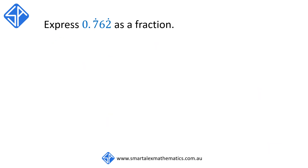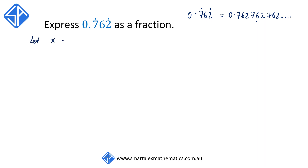Our last example: we're going to convert 0.762 repeated to a fraction. When we have the dots on top of the 7 and 2, it doesn't mean that only the digits 7 and 2 get repeated — in fact, anything in between gets repeated as well. So this is the same as 0.762762762762 and so on.